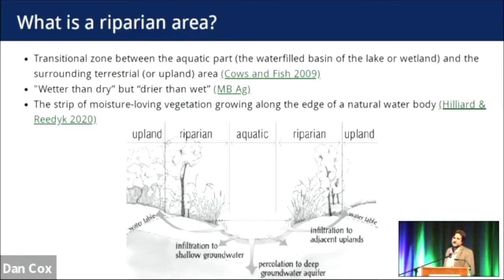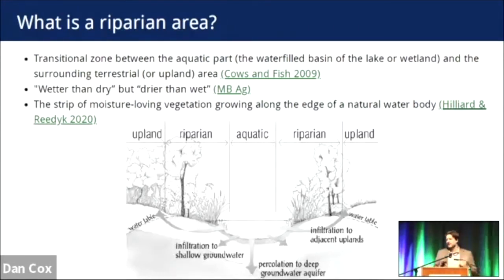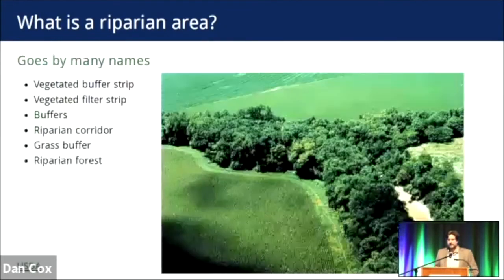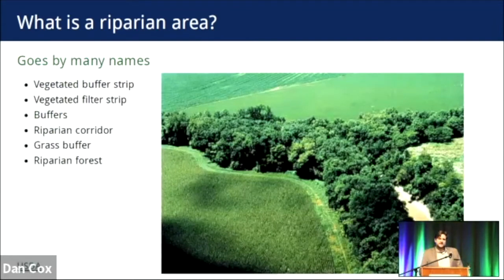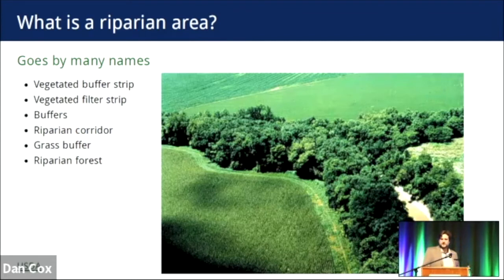We also see figures quite regularly showing the interactions between surface water and groundwater, nutrient cycling, and gas fluxes. Riparian areas go by many names — you may come across vegetative buffer strips, filter strips, buffers, corridors, grass buffers, or riparian forest. In this presentation, you can think of them all to be the same. I think the reason there are so many names has to do with who is naming them — whether you're a producer, an ecologist, or a hydrologist — how you perceive and appreciate these areas.